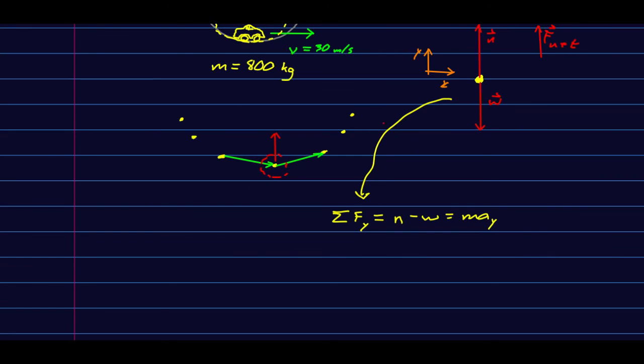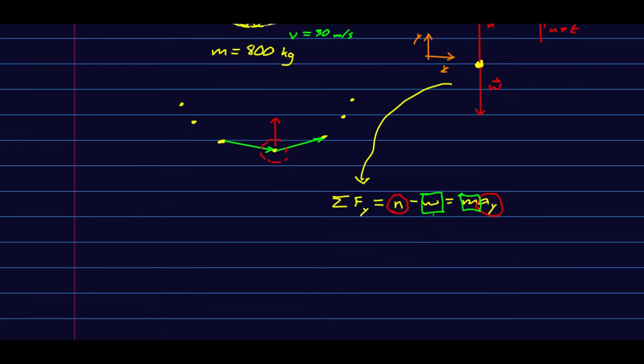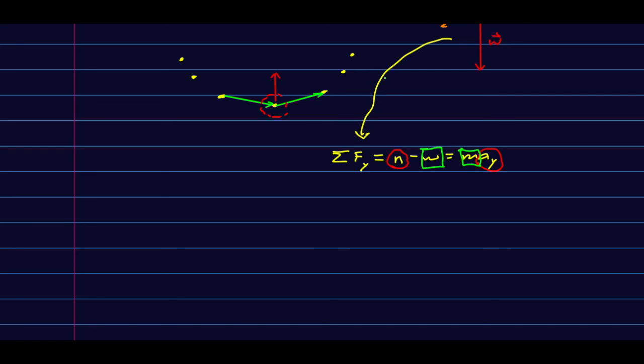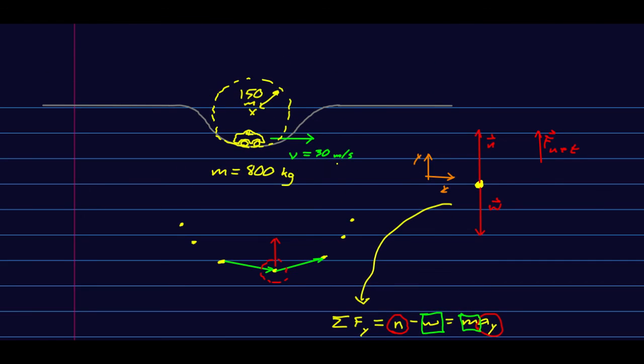And counting unknowns again, we don't know the normal. That's what I said we're looking for. We don't know the acceleration, but we do know the mass, and so therefore the weight is just mg, and I'll call that a known then. And we have two unknowns in one equation. But again, this is uniform circular motion, so our acceleration is just v squared over r, and in fact this time we just know v.